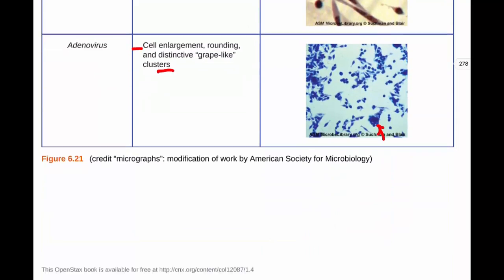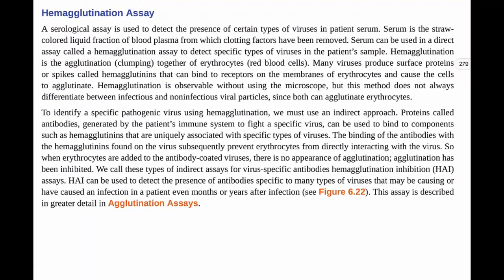We're going to talk about specific assays used for viral detection. The first is the hemagglutination assay, which is a serological assay used to detect the presence of certain viruses in a patient's serum. Serum is the straw-colored liquid of blood plasma — when you centrifuge blood and spin it fast, it separates, and the serum portion is where clotting factors have been removed.